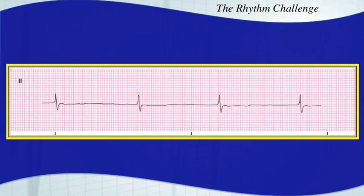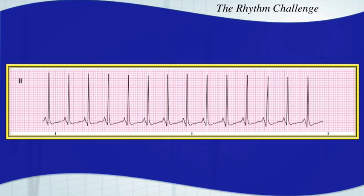Take a good look at this rhythm. You might notice something's missing. That's because this is a junctional escape rhythm — slow, narrow, and very regular junctional escape. No atrial activity.